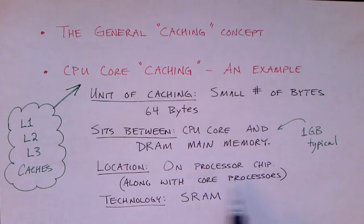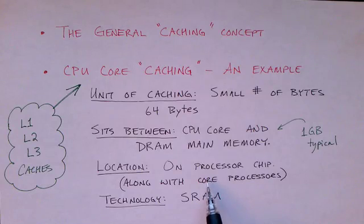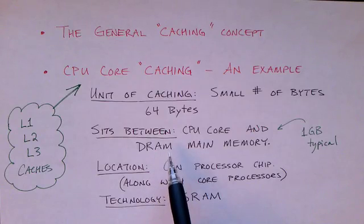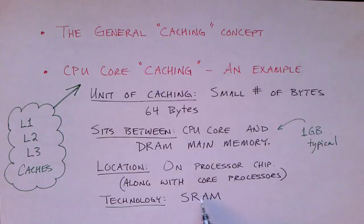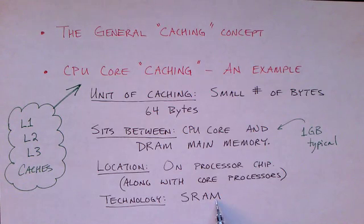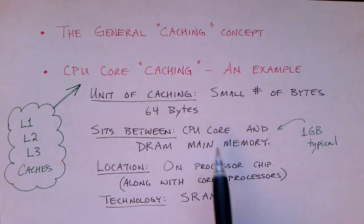In a multi-core processor, where you might have four cores, the cache sits on the same chip as the cores. Main memory is typically implemented with dynamic random access memory (DRAM), which is cheaper and smaller than static RAM. Cache memory is generally implemented with static RAM (SRAM), which is much faster but takes more transistors per bit, making it larger and therefore more expensive. So cache is small, expensive, and fast, whereas main memory is slow, cheap, and large.